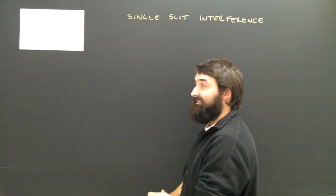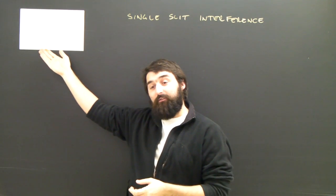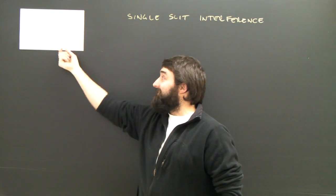Okay, so we've mastered Young's slits, the two-slit problem. But what happens when you shine a laser through a single slit, which is not very wide?